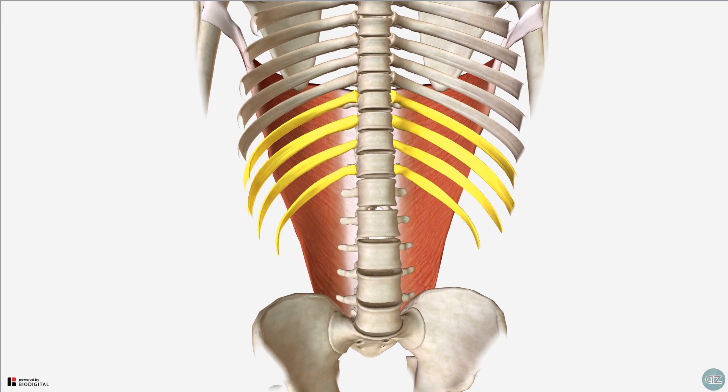There is a degree of anatomical variation with these origins, and the muscle may take origin from as little as 4, or as many as 8 thoracic vertebral spinous processes. Similarly, the number of costal attachments are varied, and the latissimus dorsi may or may not attach to the iliac crest.